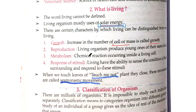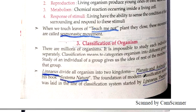Similarly, when we touch the leaves of a touch-me-not plant, they close up. This movement is known as seismonastic movement. So these are the four characteristics of living beings you have to remember: growth, reproduction, metabolism, and response to stimuli.